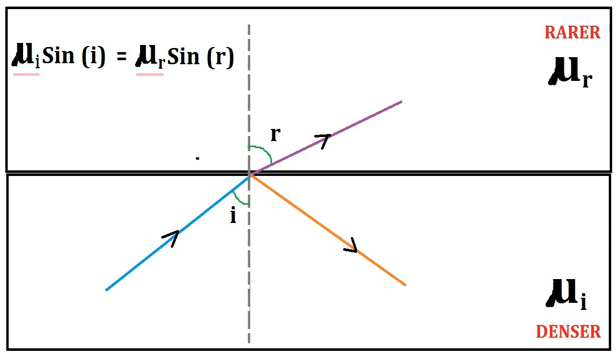If we increase the angle of incidence (i), then sin(i) will also increase on the left side of the equation. So on the right-hand side, sin(r) must increase. That is, r, which is the angle of refraction, must increase. Therefore, if we increase the angle of incidence, then the angle of refraction will also increase.